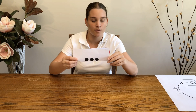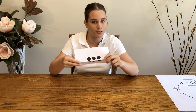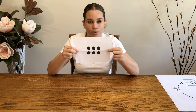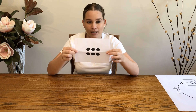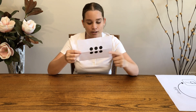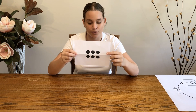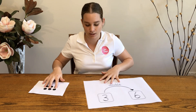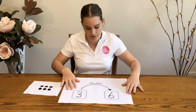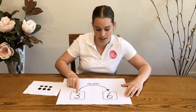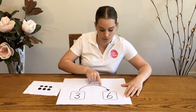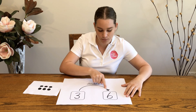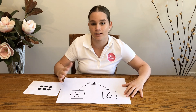We already know one row of three is three. What about two rows of three? This is double three. Double three is six, because there are two rows.